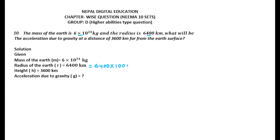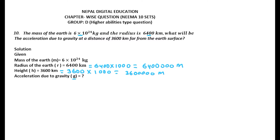So the radius becomes 6,400,000 meters. What will be the acceleration due to gravity at a distance of 3600 kilometers from the Earth's surface? We have to find g at this height. The height is 3600 km, which in SI units becomes 3,600,000 meters.